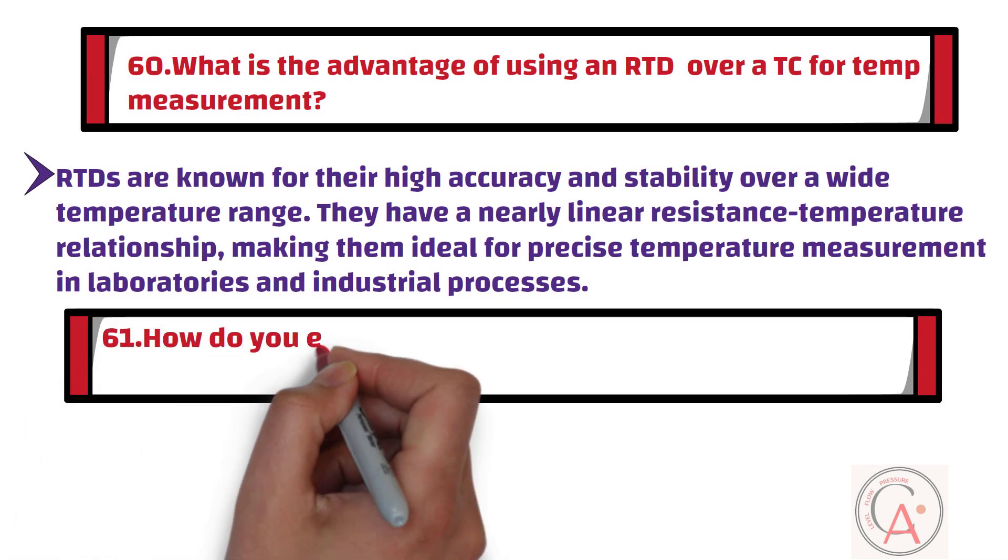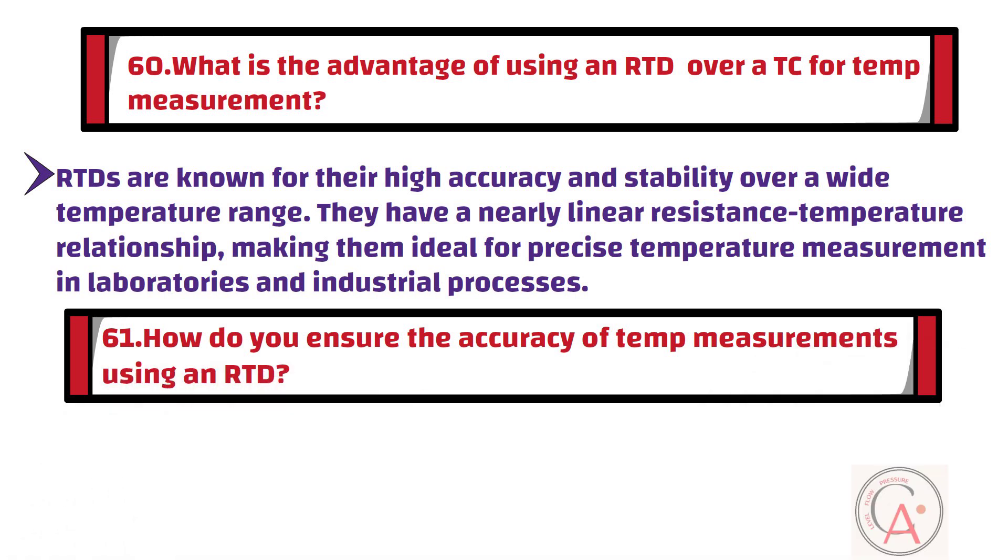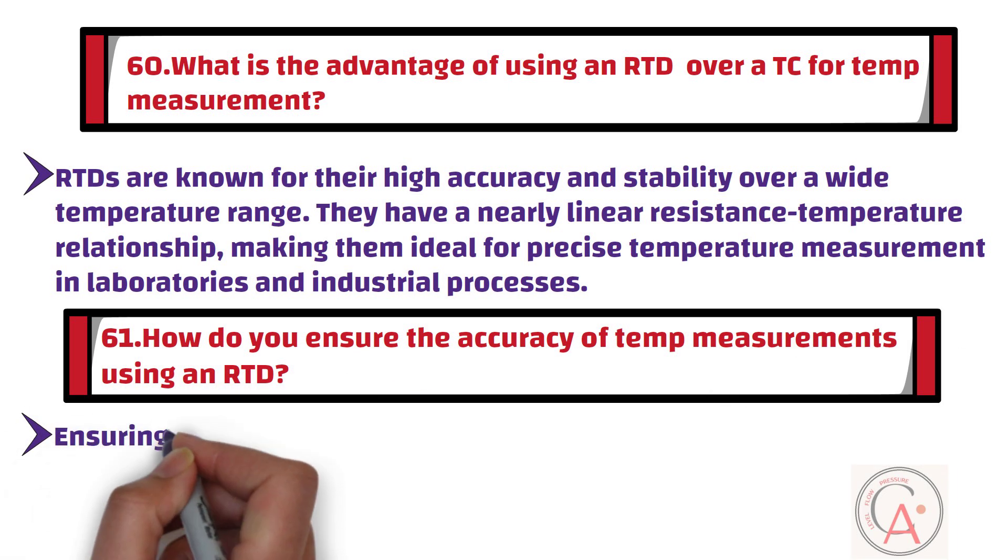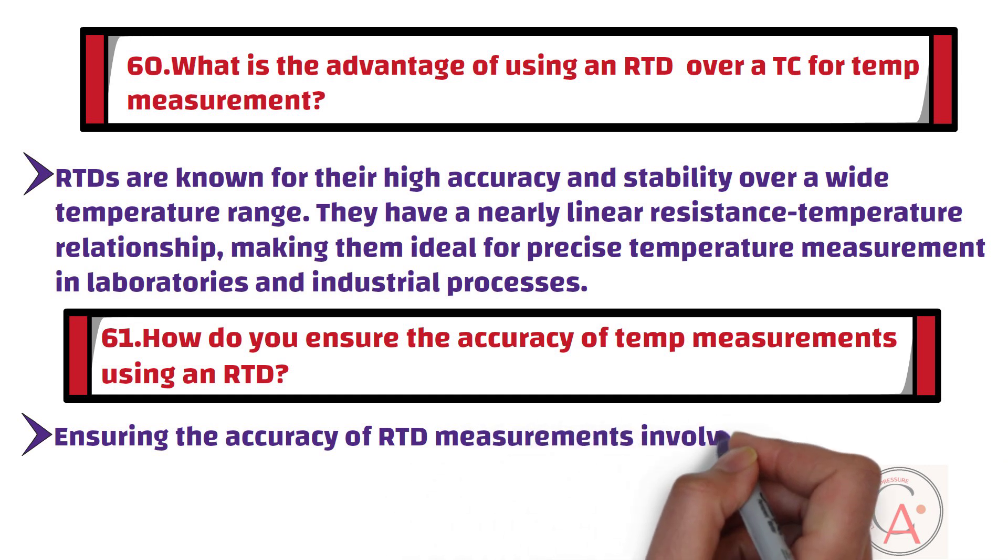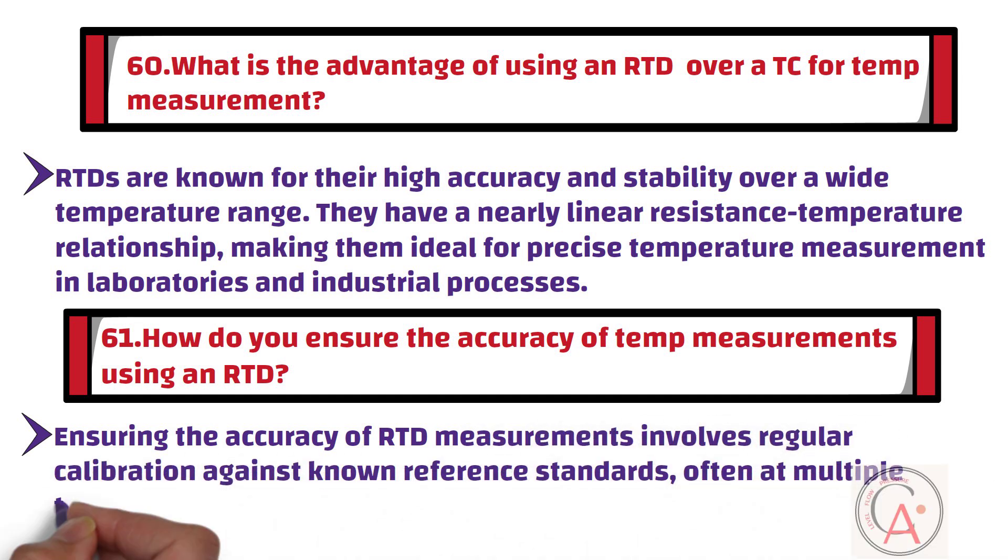Question number 61: How do you ensure the accuracy of temperature measurements using an RTD? Ensuring accuracy of RTD measurements involves regular calibration against known reference standards, often at multiple temperature points. The use of precision resistors in the measurement circuit and proper lead wire compensation are also essential.